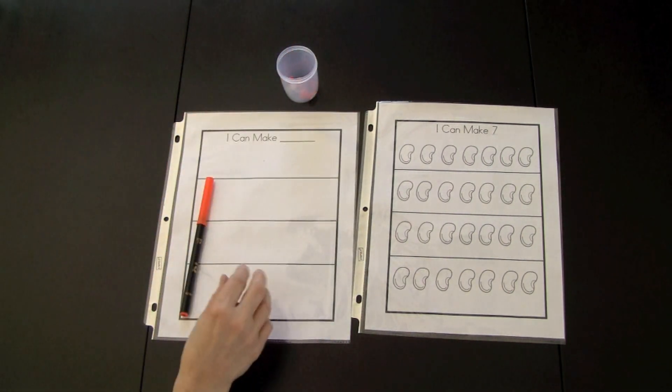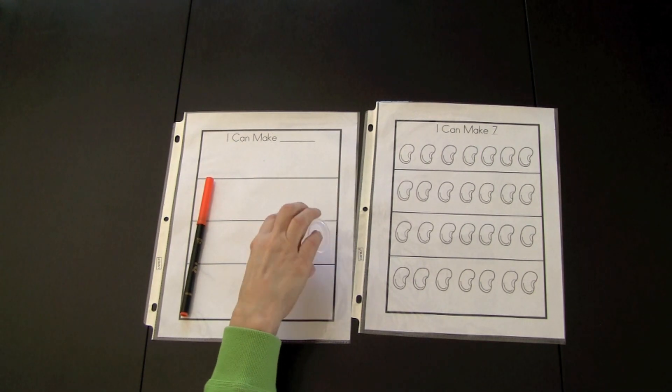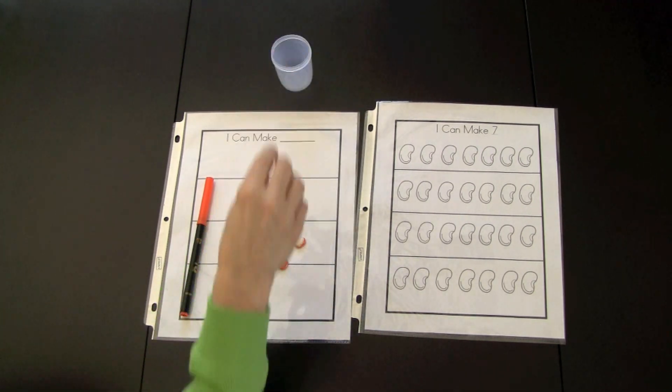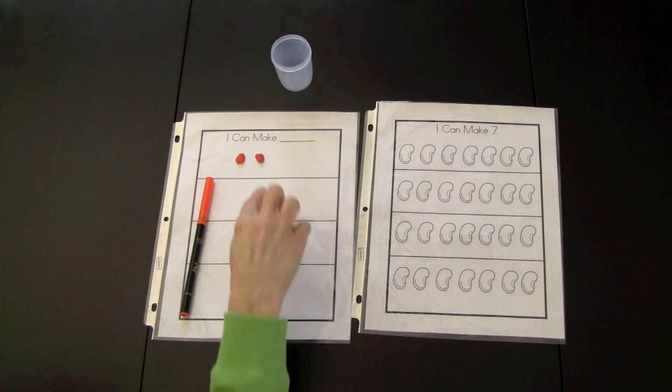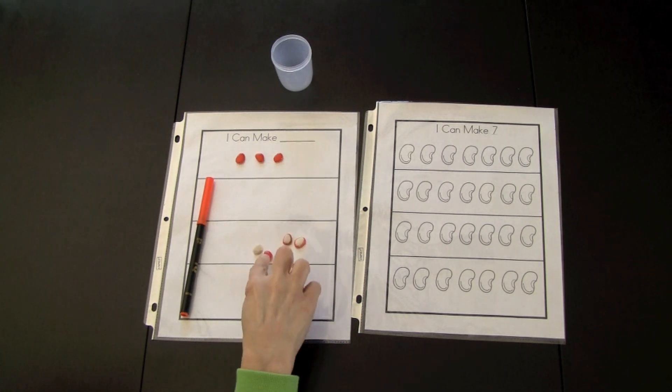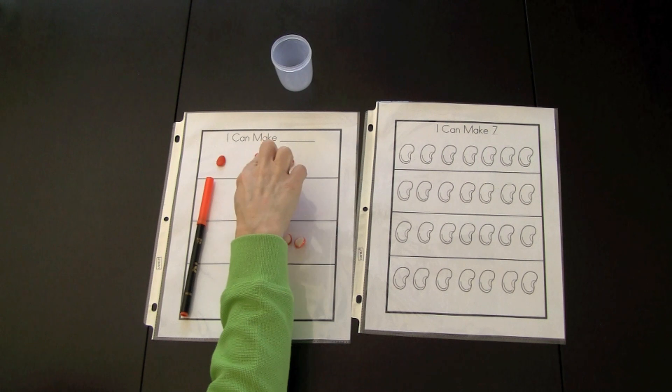They would shake the container and see what combination they could get. They got four and three, so they placed this on their grid to show the combination.